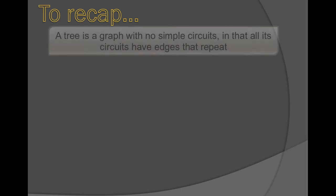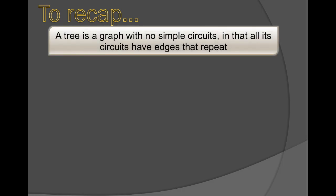So let's recap this PowerPoint. First we started off with a new definition of a tree. A tree is a type of graph that has no simple circuits in that all of its circuits have edges that need to repeat. You can't go through a tree without repeating edges.